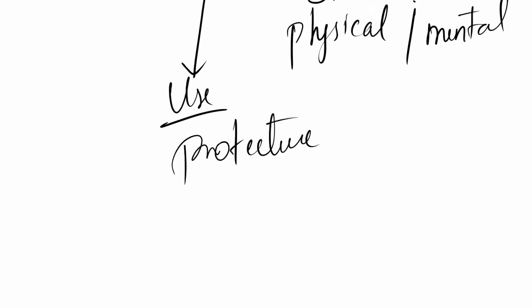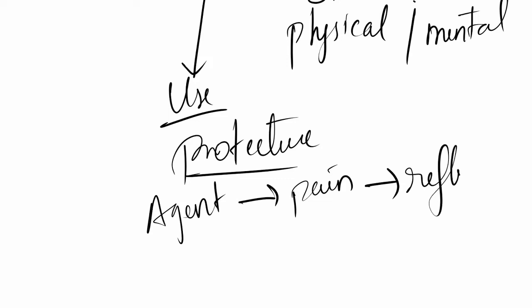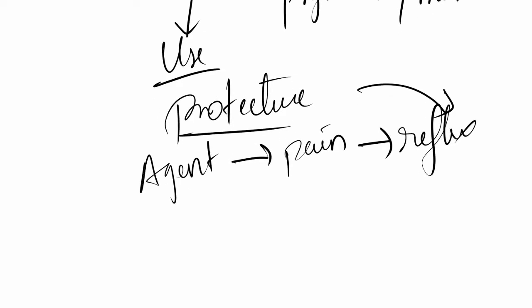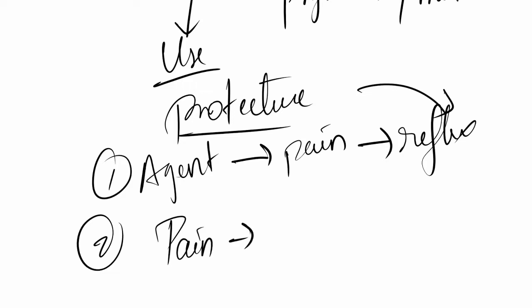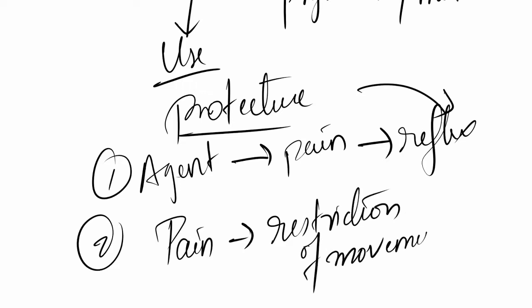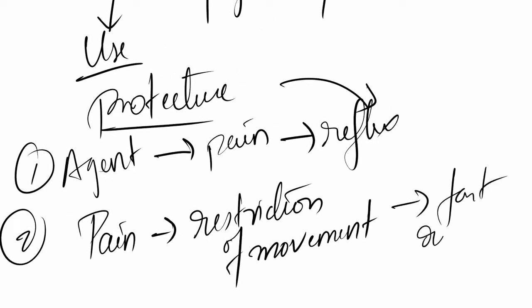What is the use of pain? It's protective in nature. Any agent that causes you pain immediately leads to a protective reflex — like when you touch a hot pan, you immediately withdraw your hand. Another protective aspect is that when you're in pain, you restrict movement, which leads to faster recovery.